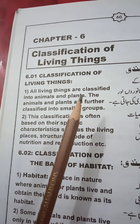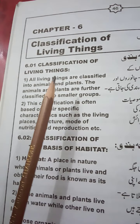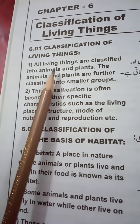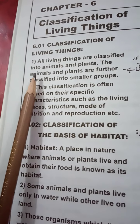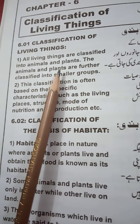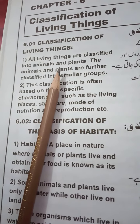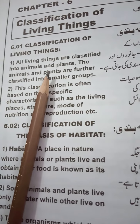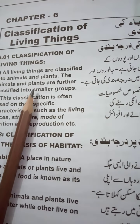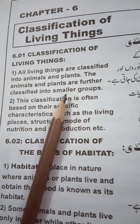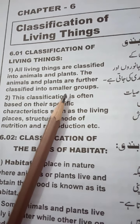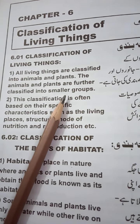Classification of Living Things — Jandar Ashiya Ki Dharja Bandi. All living things are classified into animals and plants. Tamaam jandar ashiya ki dharja bandi ki gai hai, do groups mein taqseem kiya gya hai: janwar aur paudi. The animals and the plants are further classified into smaller groups — chho'te groups mein taqseem kiya gya hai.